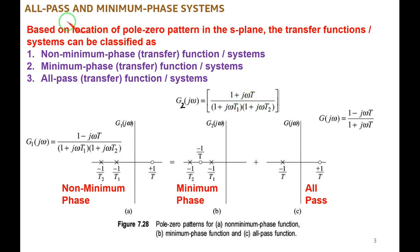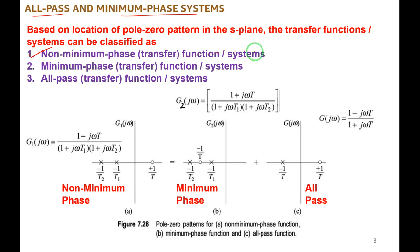We will try to understand all-pass and minimum phase systems. These are decided based on the location of the pole-zero pattern in the s-plane — whether poles are situated on the left or right half of the s-plane, and similarly for zeros. Based on the pole-zero pattern, systems can be classified into three types: non-minimum phase systems, minimum phase systems, and all-pass systems.